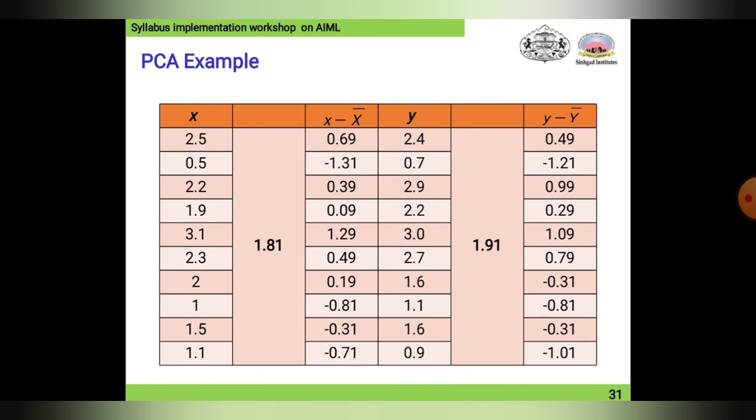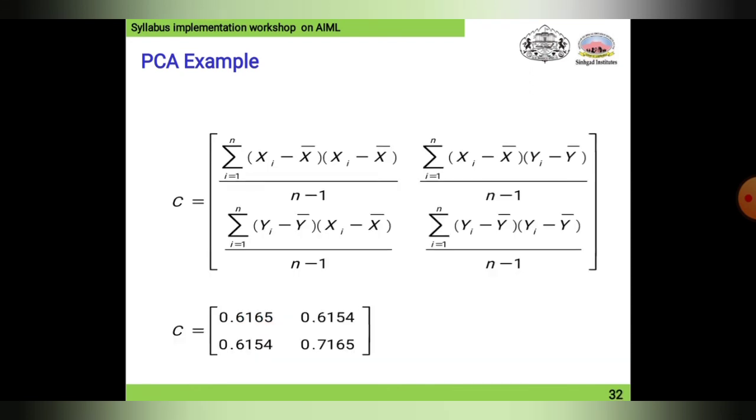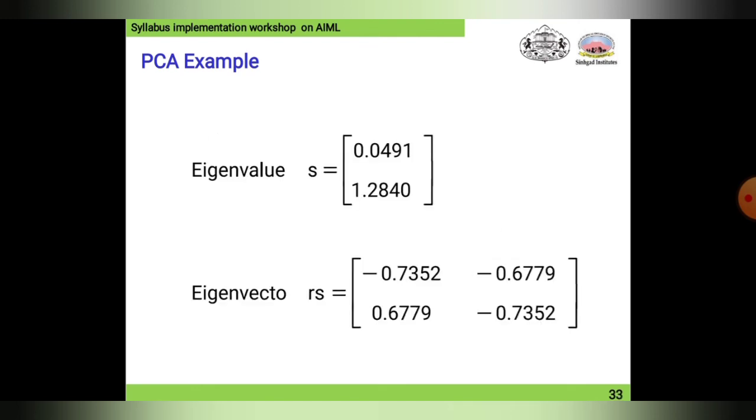This is the general mathematical formulation of PCA. These are the eigenvalue plots with the help of this component. The eigenvalues indicate 0.0491 and 1.2840, and the eigenvectors are minus 0.7352 and minus 0.67.